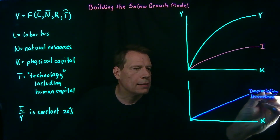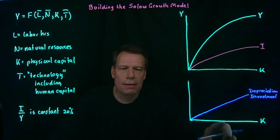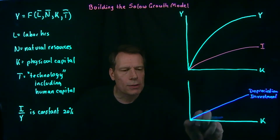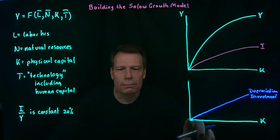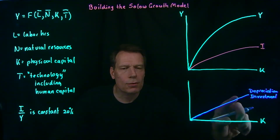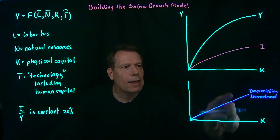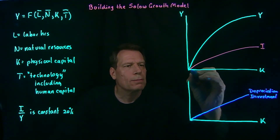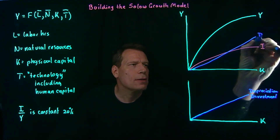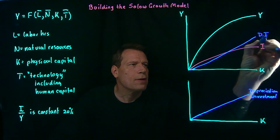Adding that depreciation investment line to the picture, we get two curves that intersect, and we know in economics there tends to be something special about an intersection. If capital is below the intersection, the amount we'd have to spend to maintain that capital is less than what we're actually investing, so capital will increase. If capital is above the intersection, we're investing less than needed to keep the capital stock constant, so capital will depreciate.